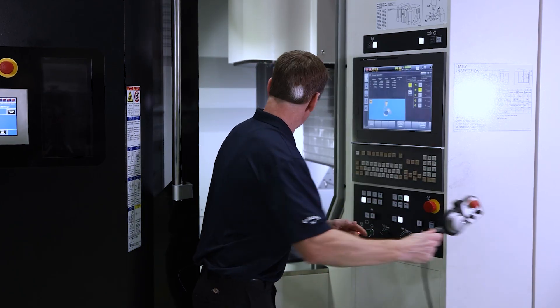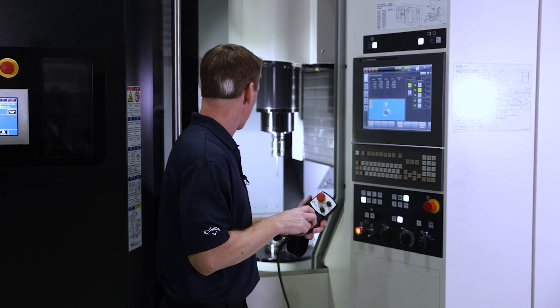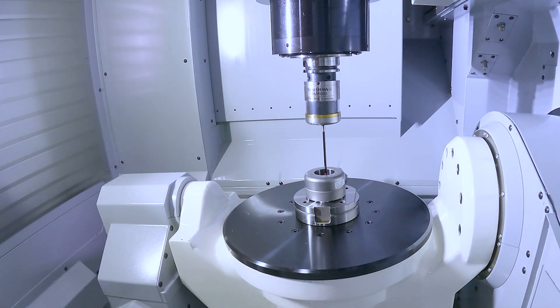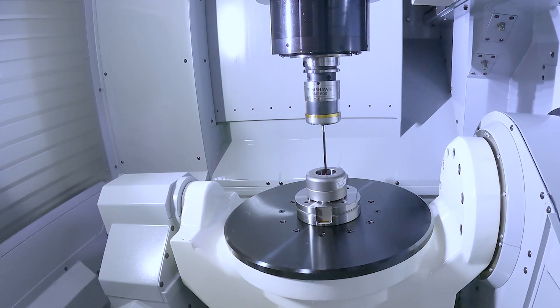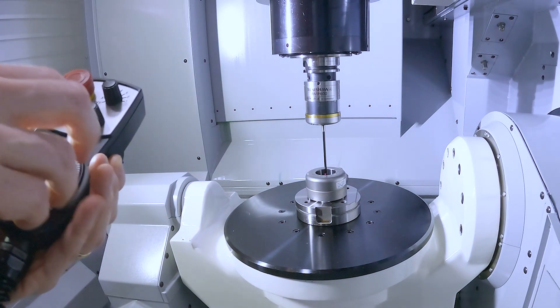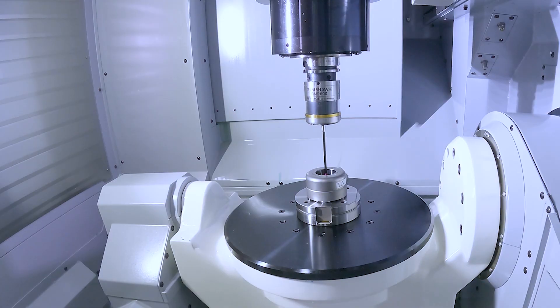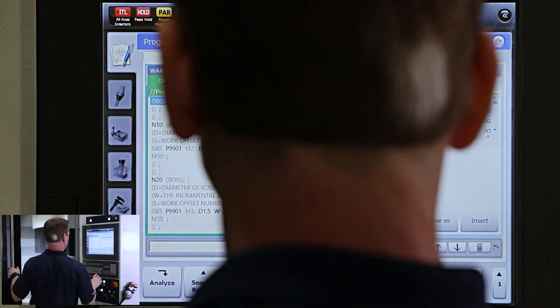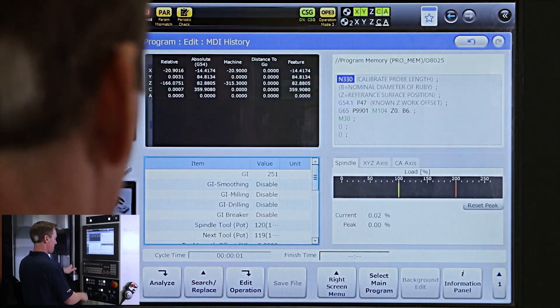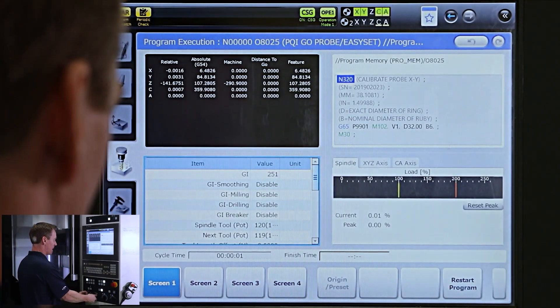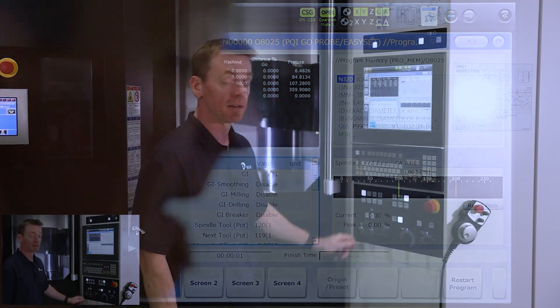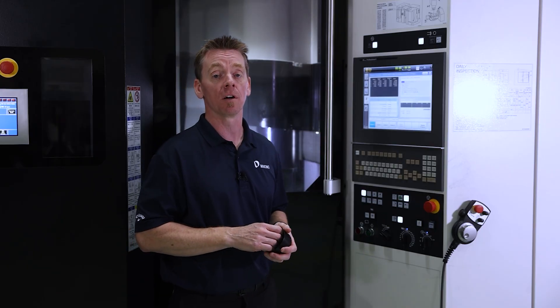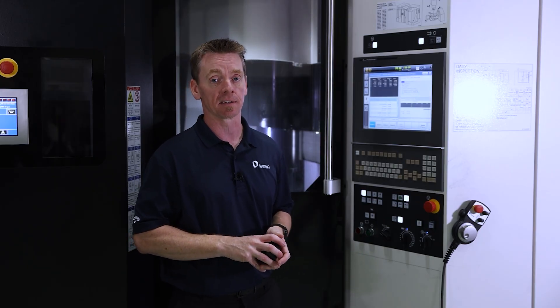And then all we're going to do is run this probe down in the center, approximate center of where that is. Make sure it's clean on the inside. Make sure we cover the high part of the ruby. We're going to go back to our program at N320. Memory. Turn our feed up to 100. I have the rapids at about 10. Cycle start. And away we go. And that completes the calibration of your probe on the DA300. And that was today's tech tip.